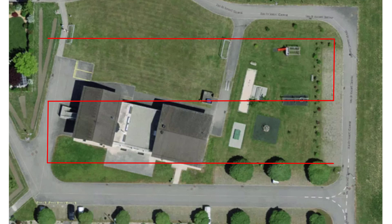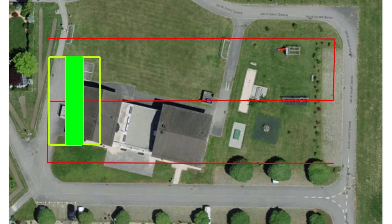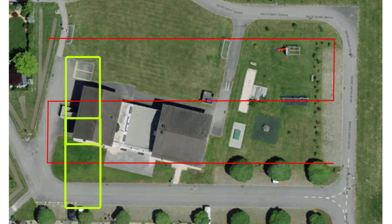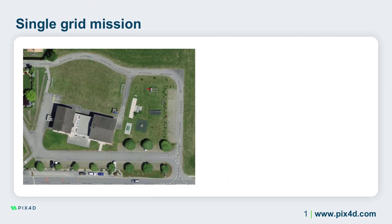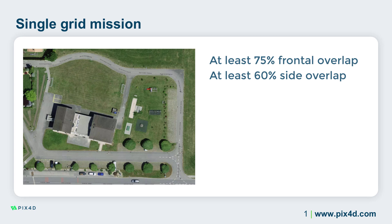When flying a single grid mission, we recommend capturing at least 75% front and 60% side overlap. Front overlap is the overlap between consecutive images, and side overlap is between adjacent flight lines. These are the minimum overlap values we recommend when conditions are ideal for photogrammetry. However, you may find that you must capture more overlap to achieve the results you need.